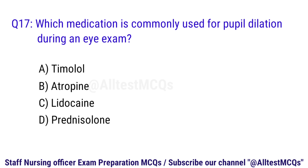Q17. Which medication is commonly used for pupil dilation during an eye exam? The correct option is B. Atropine.